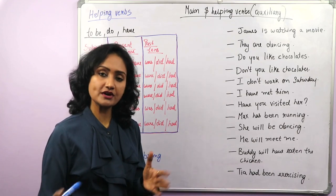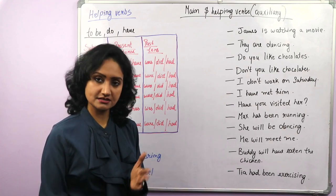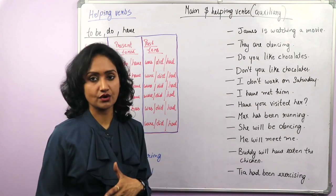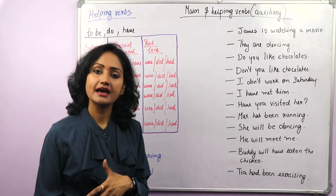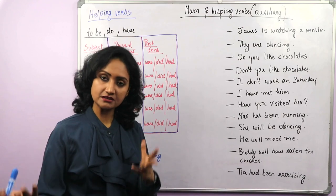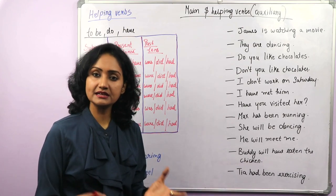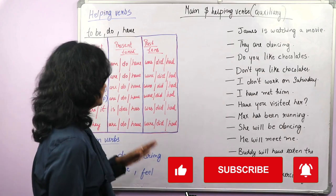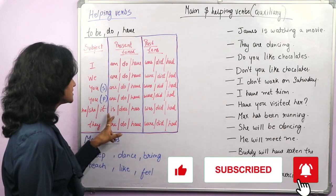In simple present tense, we use don't or doesn't, or do not or does not. With he, she, it, we use does and does not. With others like I, you, we, they, we use do not. He, she, it: does; and for have — he, she, it: has.